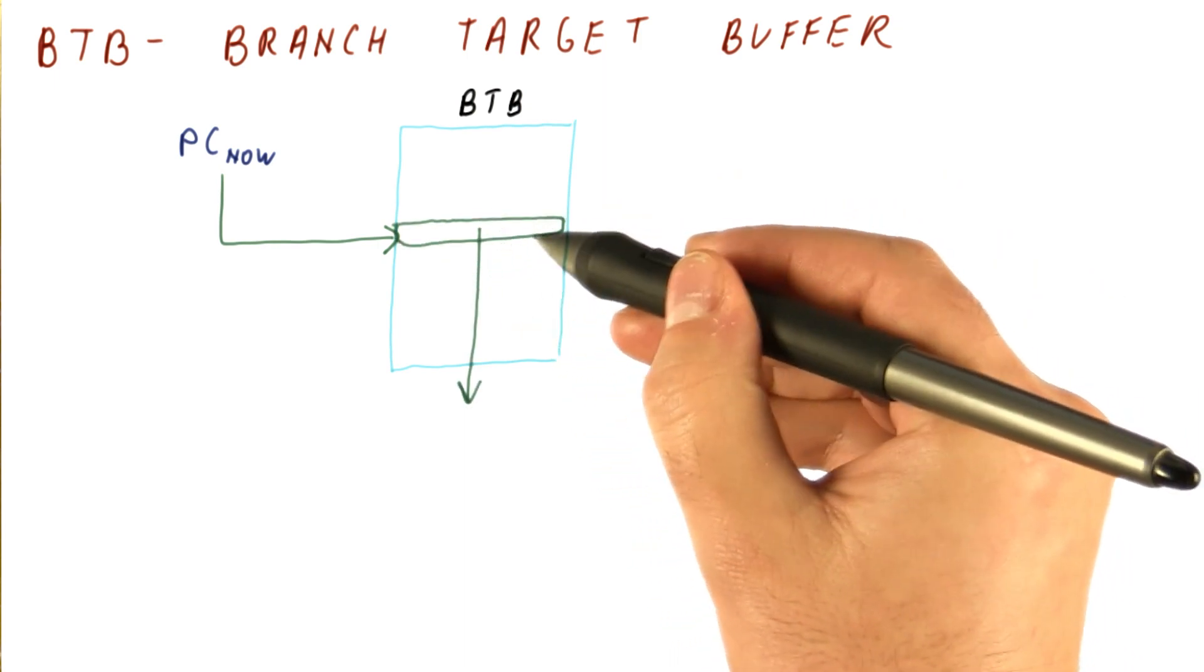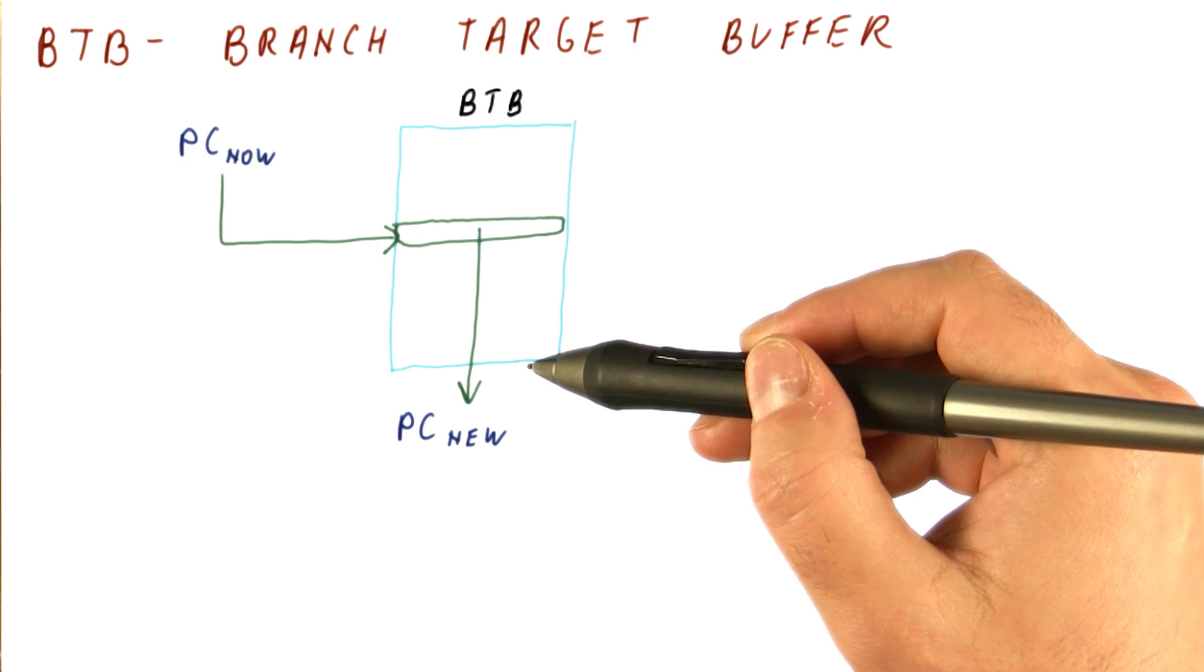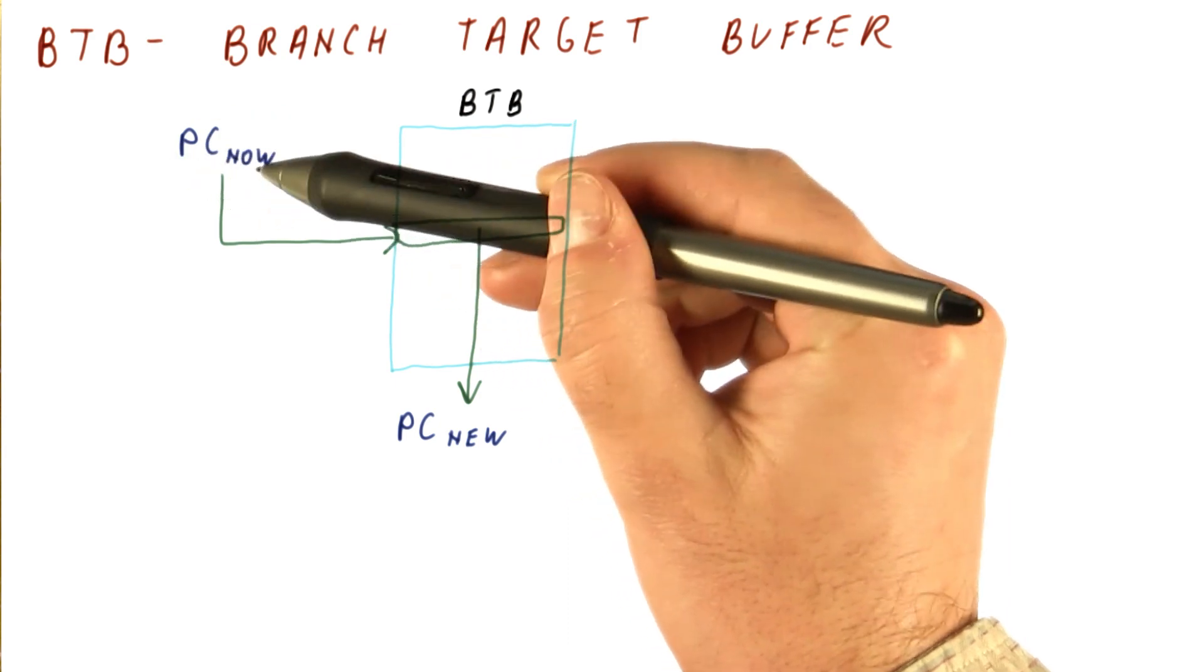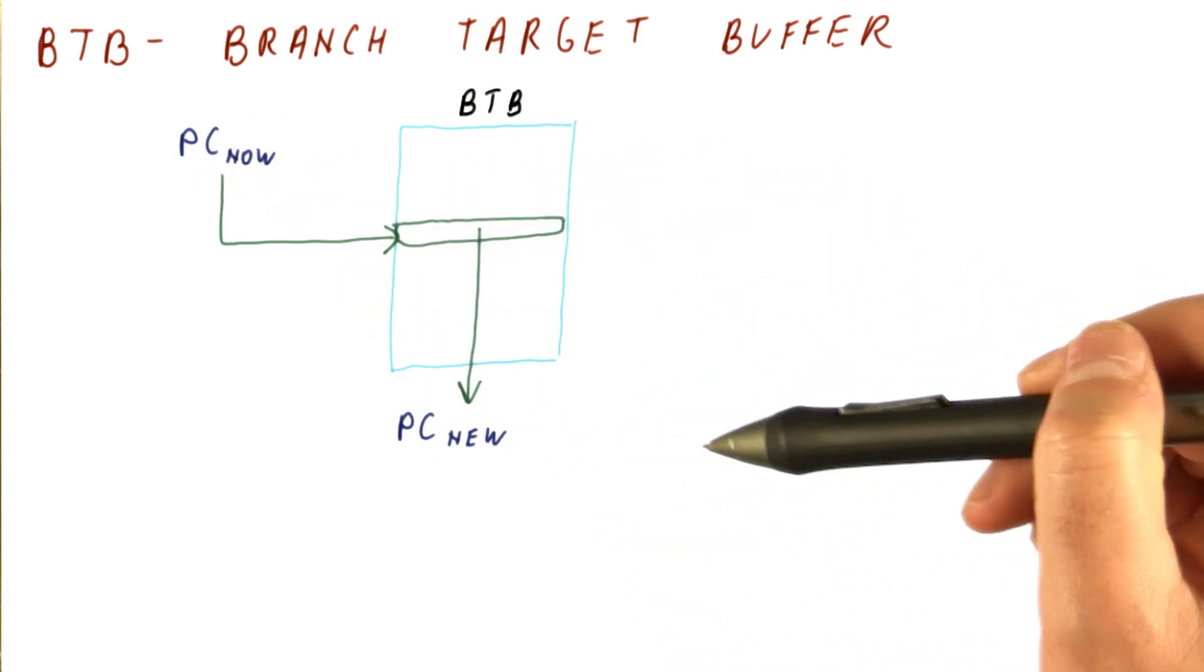And from this table what we read out is our best guess for what the next PC will be. But how do we know what to put in this table? Well, we carry the PC of the branch and the predicted PC with it through the pipeline.